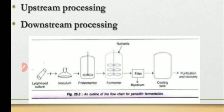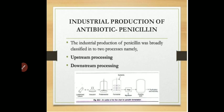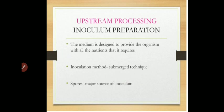After fermentation, we proceed to the downstream process, which includes filtration or centrifugation to separate the mycelium and other media components. The liquor is then added to a cooling tank and the purification process of the antibiotic is carried out. Let's go through all these processes in detail one by one, starting with upstream processing.